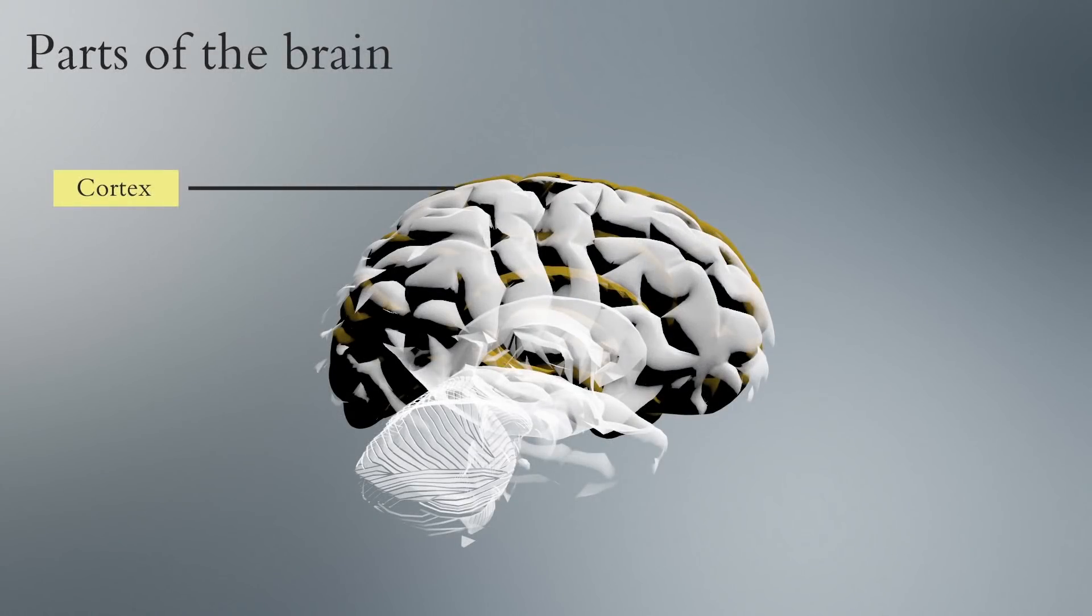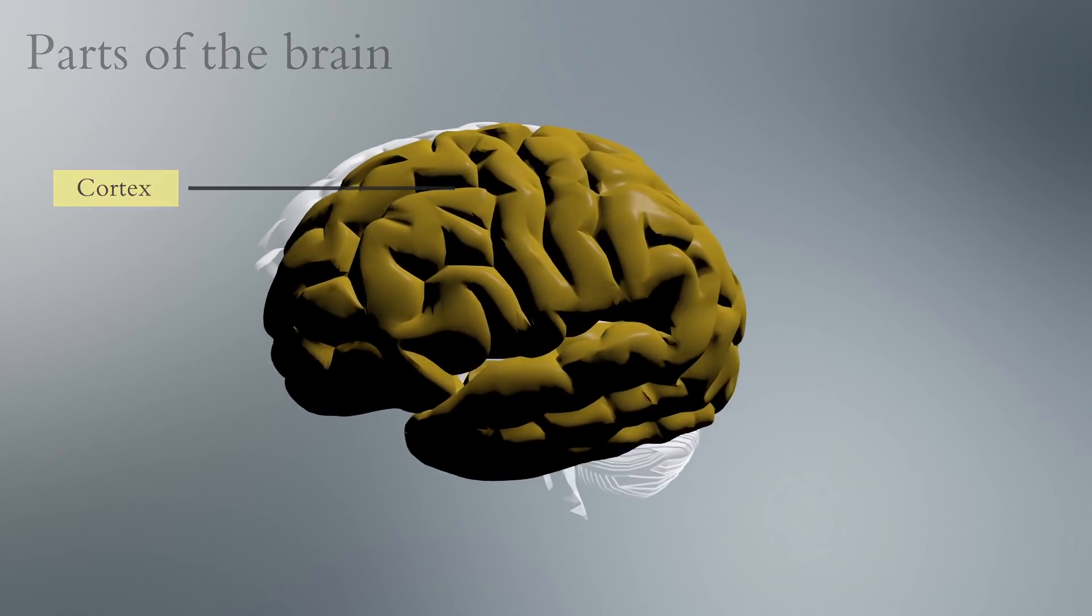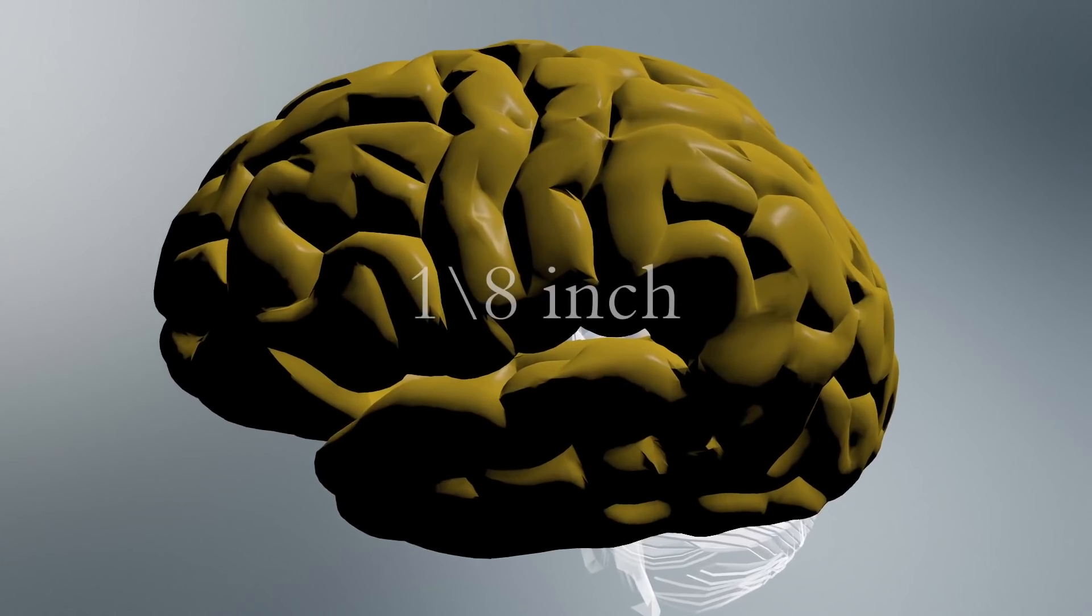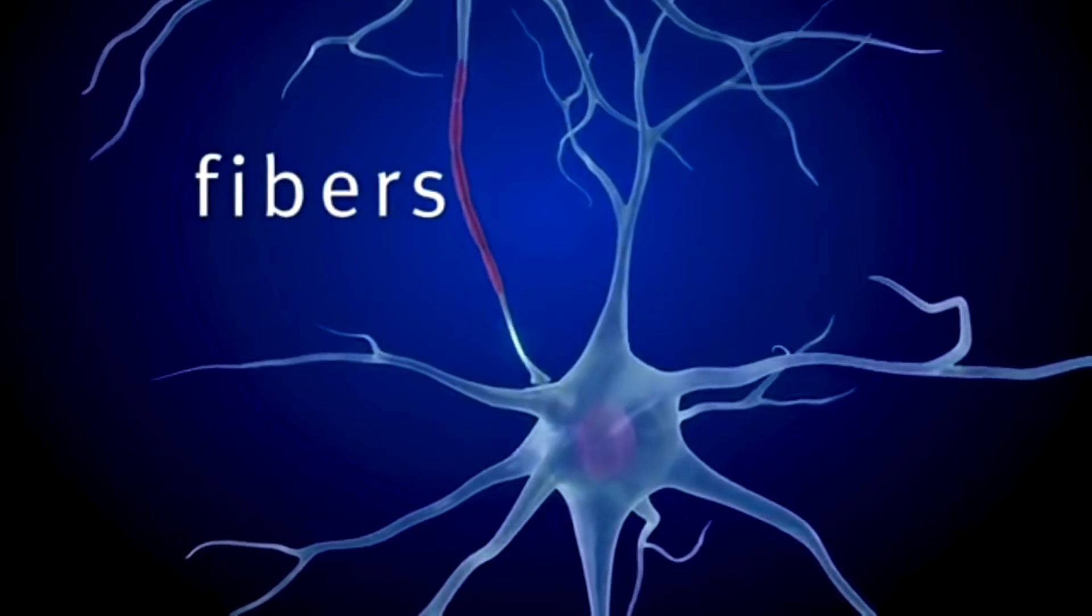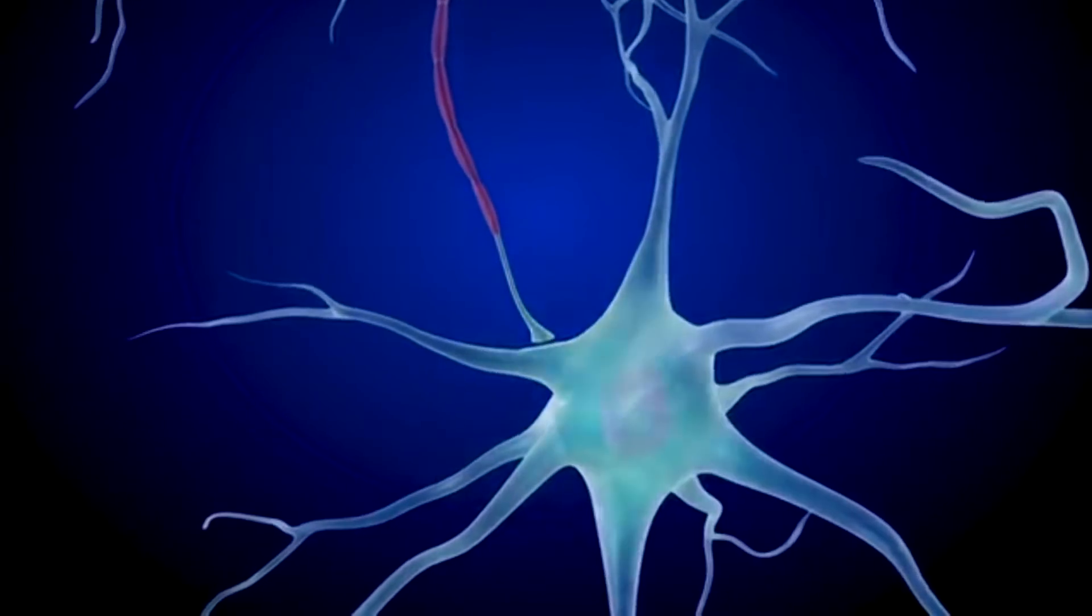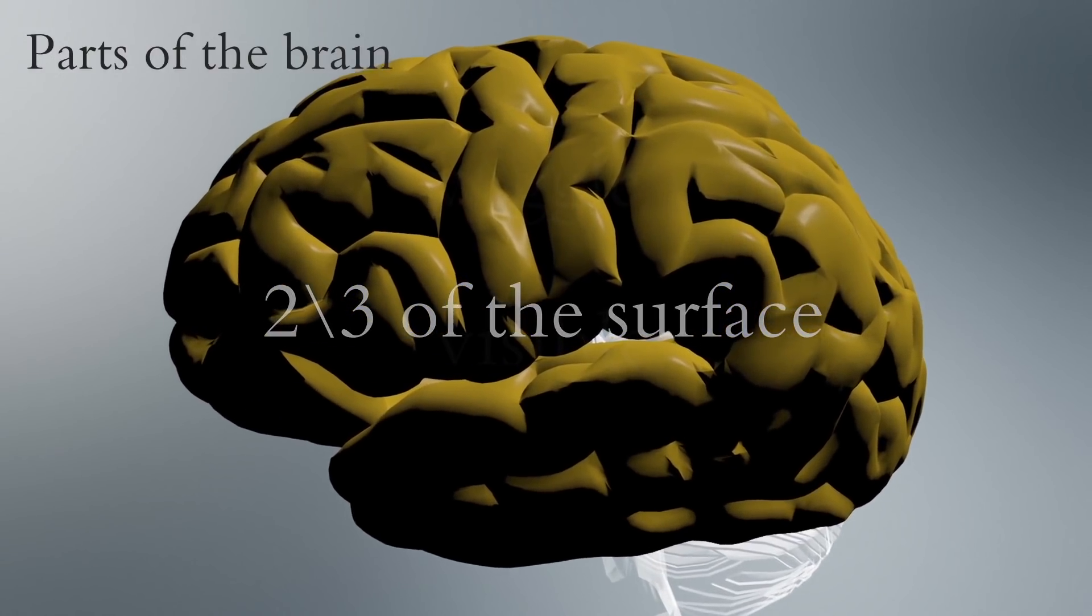The outer layer is known as the cortex, which is Latin for bark. Like a tree's bark, the surface is only one-eighth inch thick, but it also contains millions of cells with fibers that send messages to other brain areas.